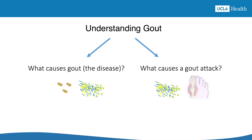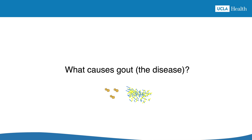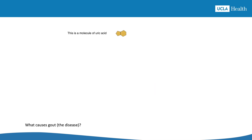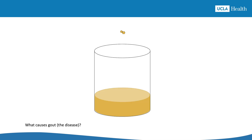Let's answer the first question: What causes gout the disease? Gout the disease is caused by too much uric acid in the blood. Too much uric acid in the blood over time leads to formation of uric acid crystals. This is a molecule of uric acid, which circulates in your blood. We'll use the fluid level in this tub to represent the amount of uric acid circulating in your blood.